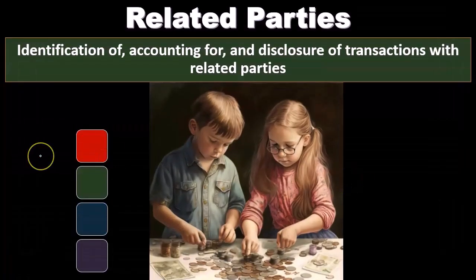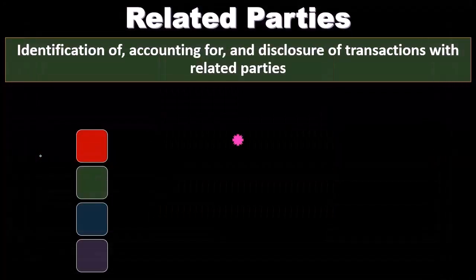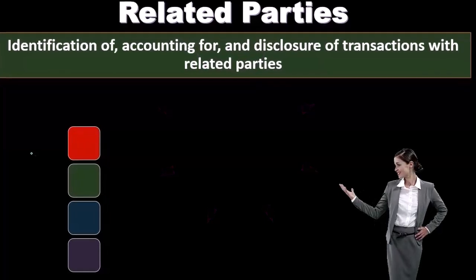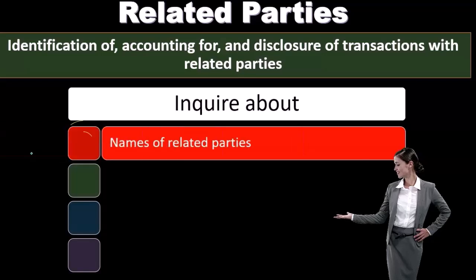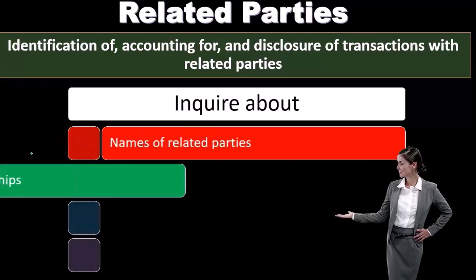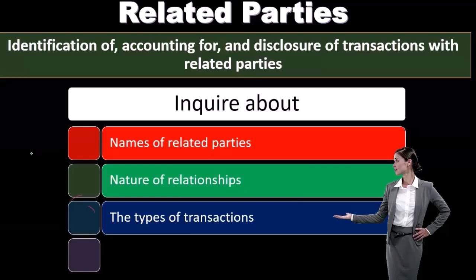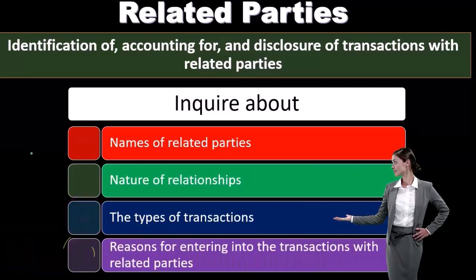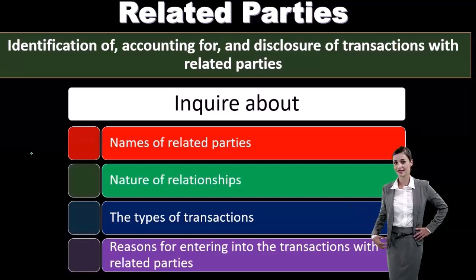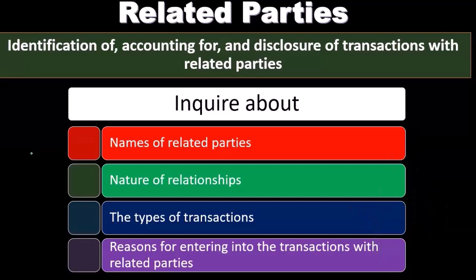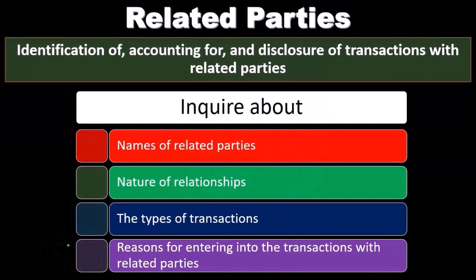Therefore, we need to know who the related parties are and how they are recording information. We know that family-like business relationships are going to be unusual, so once we identify the related parties, we want to know what the transactions are and how they are taking place. We will inquire about the names of the related parties, the nature of the relationship, the types of transactions, and the reasons for entering into those transactions.